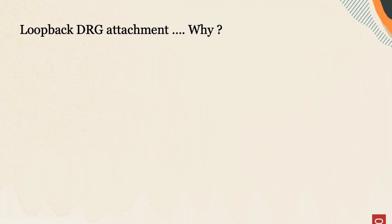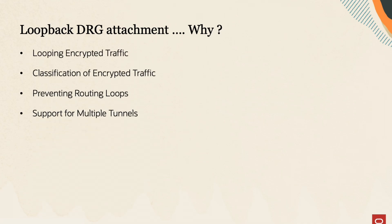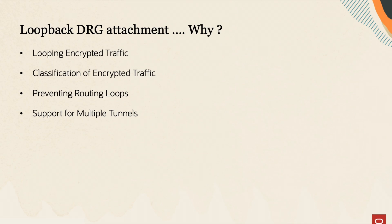Let's look at this new type of attachment called loopback attachment. When you enable IPsec over FastConnect, the DRG introduces a new type of attachment called loopback attachment. There are multiple benefits to this. First, the DRG needs to redirect encrypted traffic into a private IPsec tunnel within the DRG itself. Encrypted traffic destined for the IPsec tunnel over the DRG must be classified in a distinct manner to support private IPsec tunnels effectively. Another benefit is preventing routing loops — routes received from the customer over IPsec tunnel and the virtual circuit should not be exchanged between their respective route tables. The DRG should also be capable of accommodating multiple tunnels with the same private Oracle head-end IP.